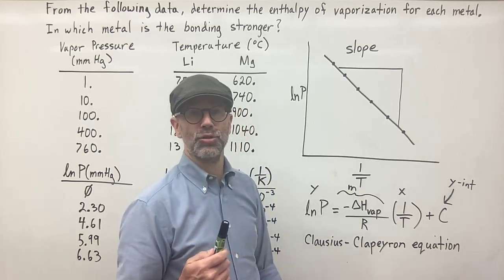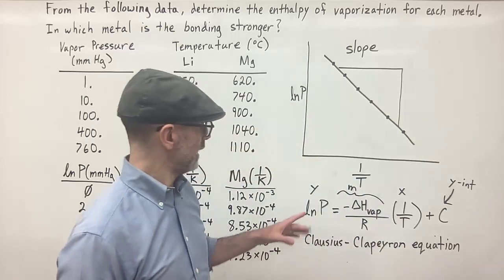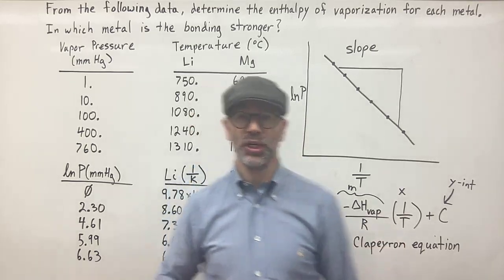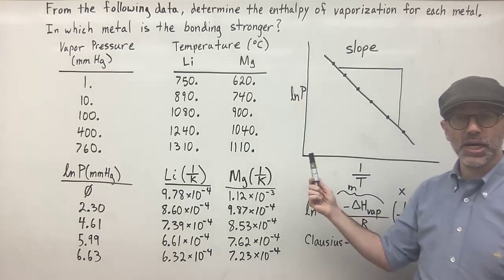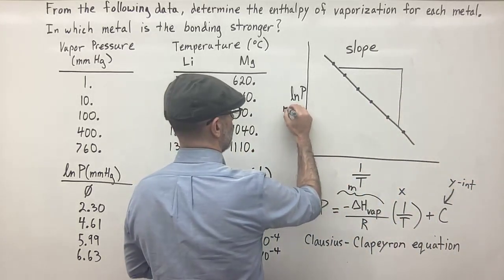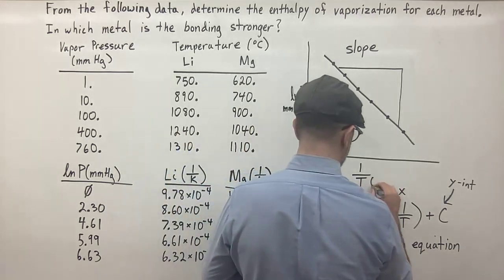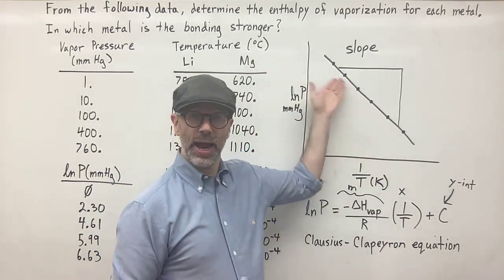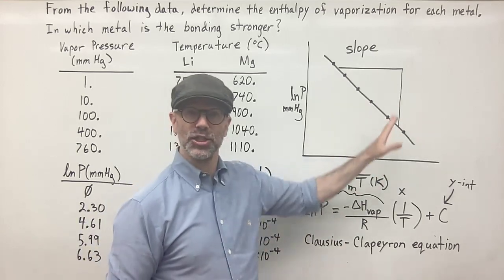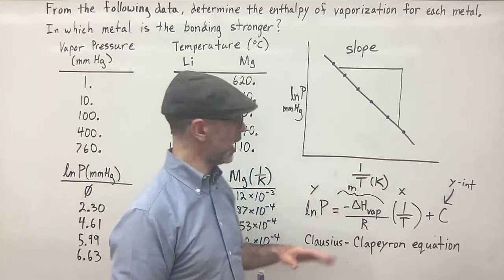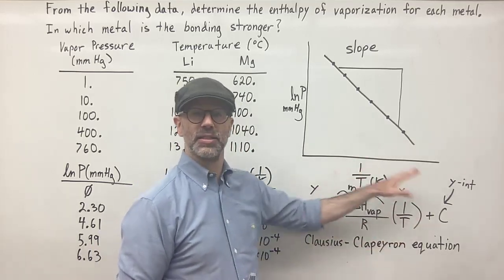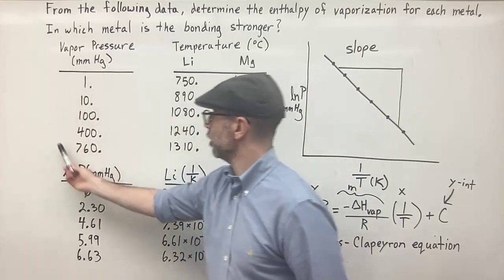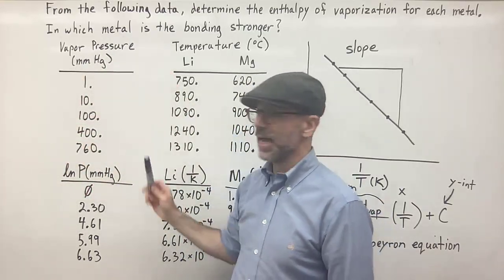If we can get the natural log of the pressure and the inverse of the temperature in Kelvin, then we can plot this data using Excel. The pressure will be in millimeters of mercury and the temperature in Kelvin. We plot that information in Excel to get the graph, then tell Excel to give us the equation of the line. From that equation in y = mx + b form, we can get the slope. They give us the pressure in millimeters of mercury, so we take each value and take the natural log.